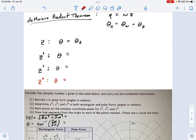What I want to do is start off with the product theorem and say if I have some complex number z, and we're going to say theta equals theta z. That's just what it is. Now, what if I said z squared? Well, that's z times z.